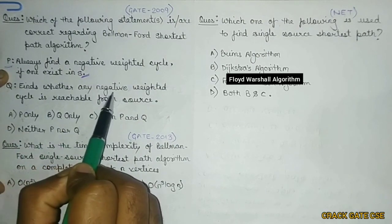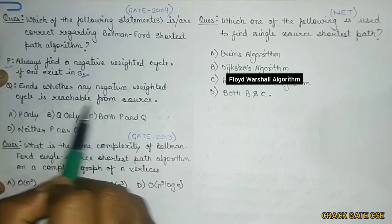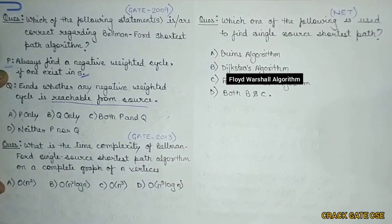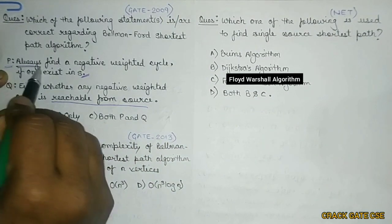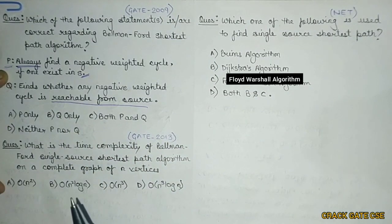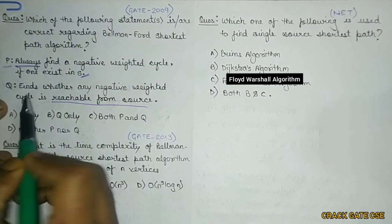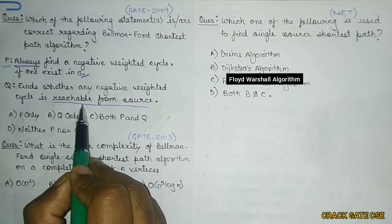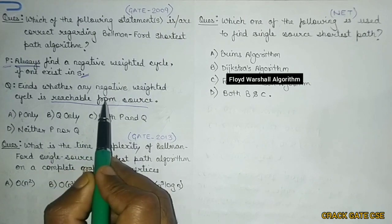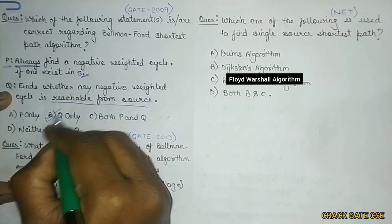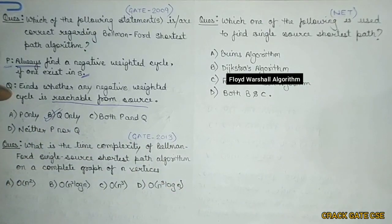Q says that find whether any negative weighted cycle is reachable from the source. So here this is asking that reachable from the source and here it is saying always. So if there is a disconnected graph, it cannot always find a negative weighted cycle. But if it is reachable from source, then it can find the negative weighted cycle. So which one among these is true? Q is true. That means B is the right answer.